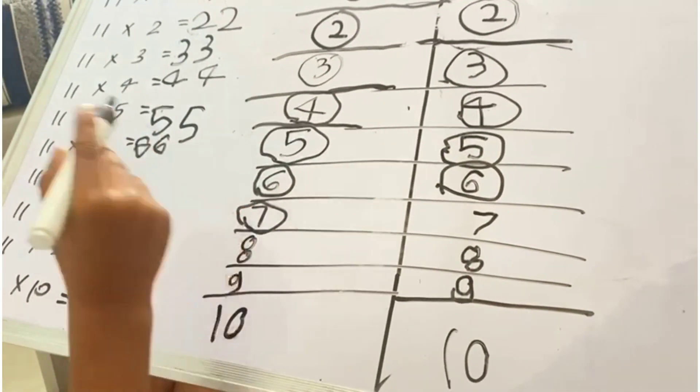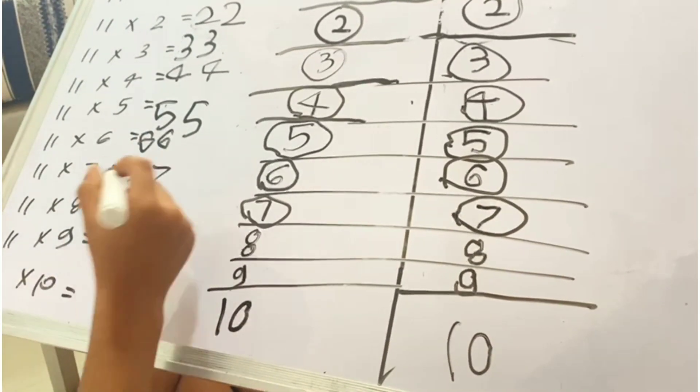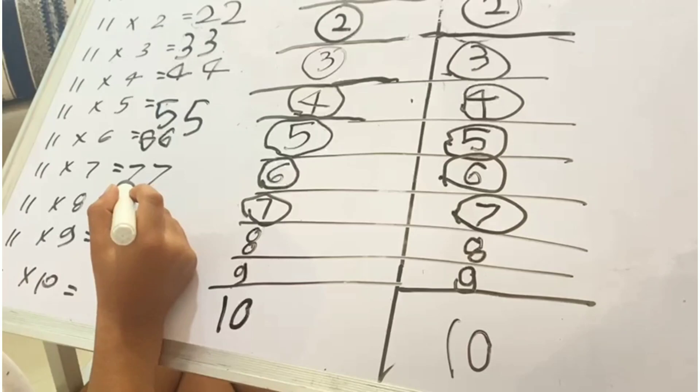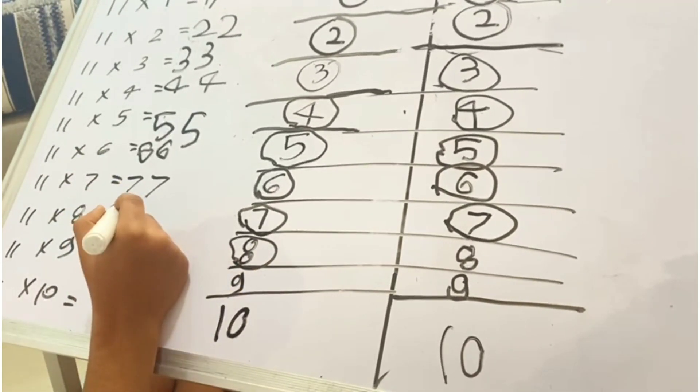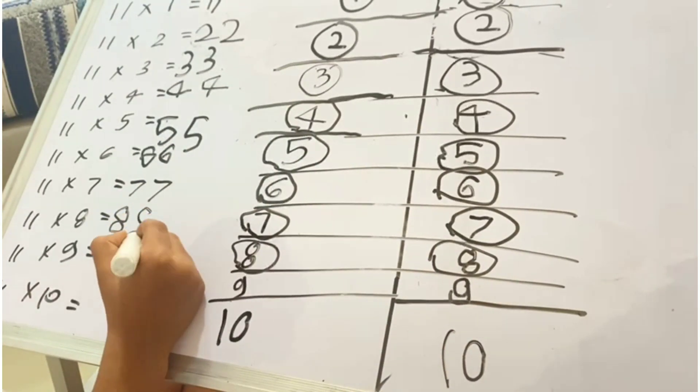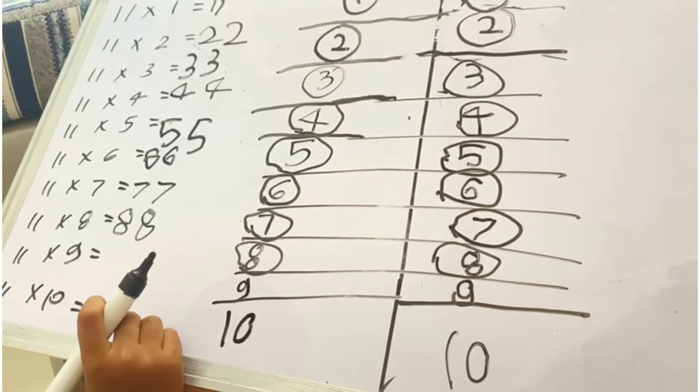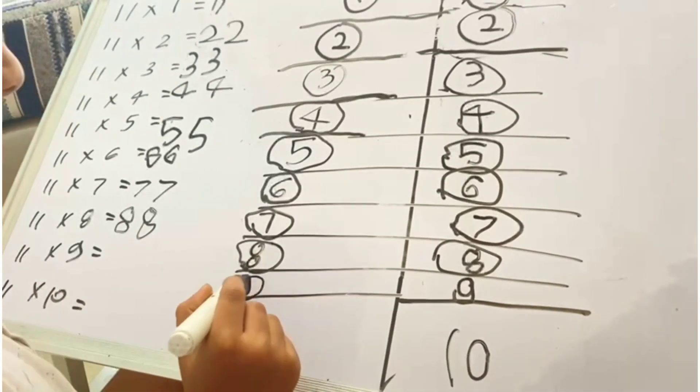This 7 right here, this 7 right here. 11 sevens, 77. This 8 right here, this 8 right here. 11 eights, 88.